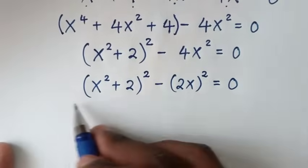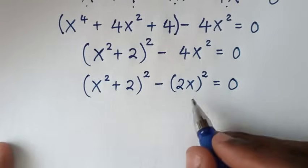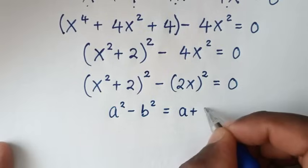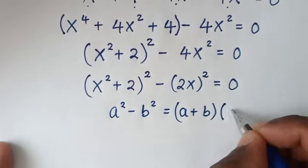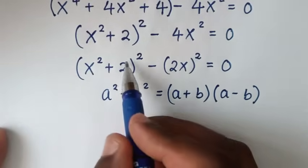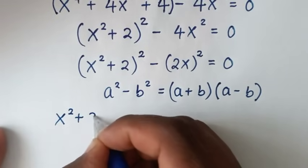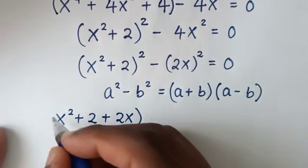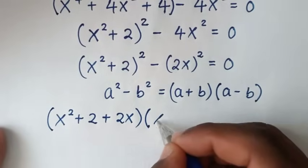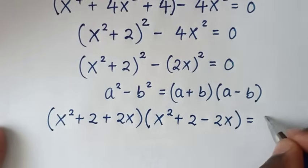Now this step is in the form of a difference of squares, because we have this square minus this square. So we'll apply the difference of squares rule, in the form a² − b² = (a + b)(a − b). Applying this, it will be (x² + 2 + 2x) times (x² + 2 − 2x) is equal to 0.